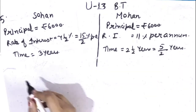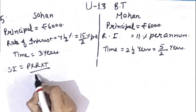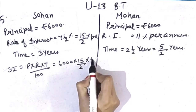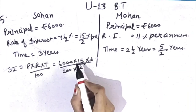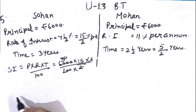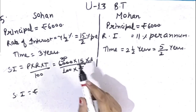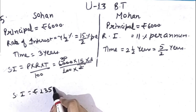Find simple interest for Sohan. Formula: principal × rate of interest × time ÷ 100. Principal is 6,000, rate of interest is 15 by 2, time is 3, divided by 100. Cancellation: 2 zeros cancel, then 2 cancels with 30. Multiplying remaining terms: 15 × 3 is 45, 45 × 3 is 135. With the remaining zero, simple interest for Sohan is Rs.1,350.